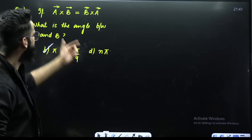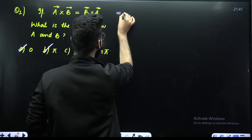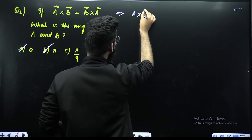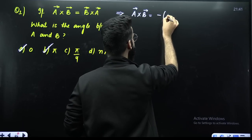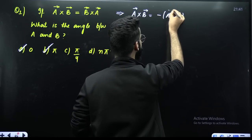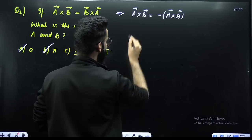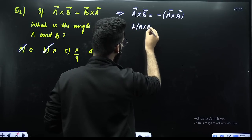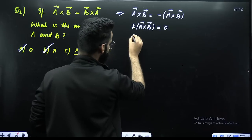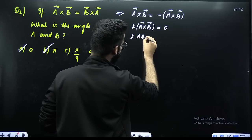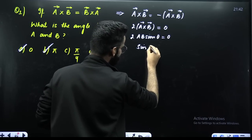Now how exactly are you going to do it? A cross B is equal to B cross A. I am writing A cross B as such, and this B cross A I am writing as minus A cross B. If I bring minus A cross B to the left side, it's going to be A cross B plus A cross B, which makes it 2 times A cross B. This has to be 0. So 2 times A cross B is nothing but AB sine theta. So 2 times AB sine theta has to be 0, telling you that sine theta has to be 0.